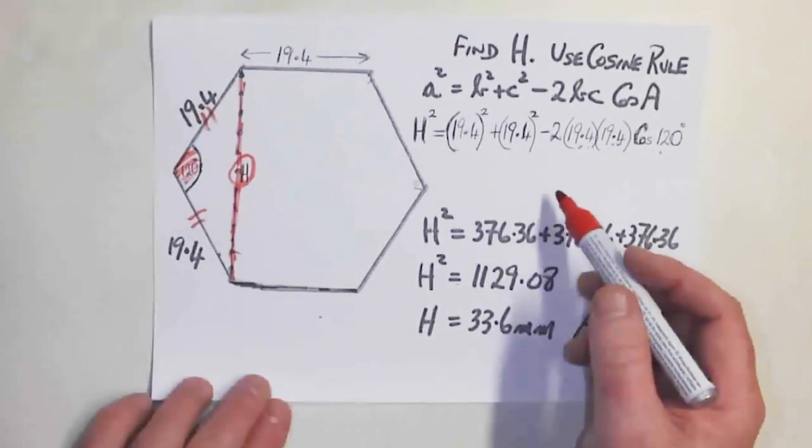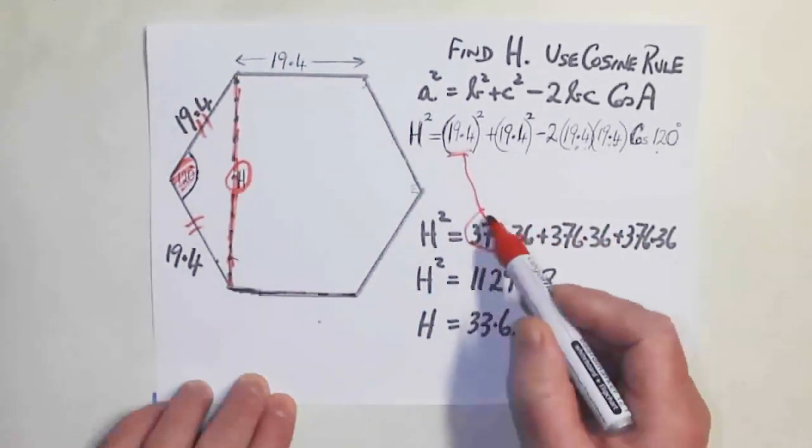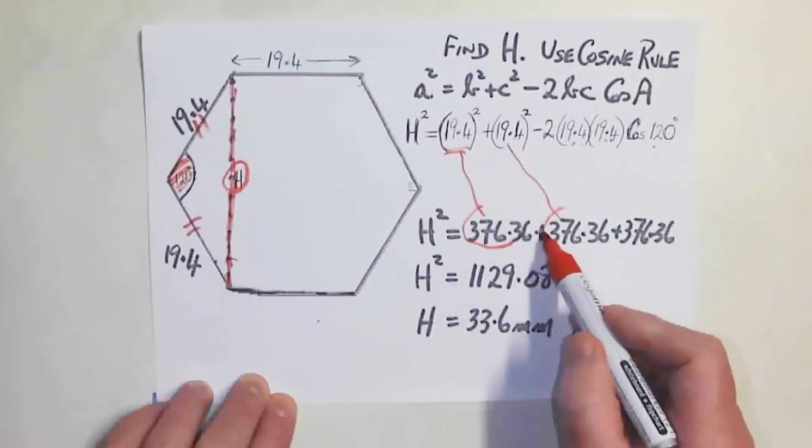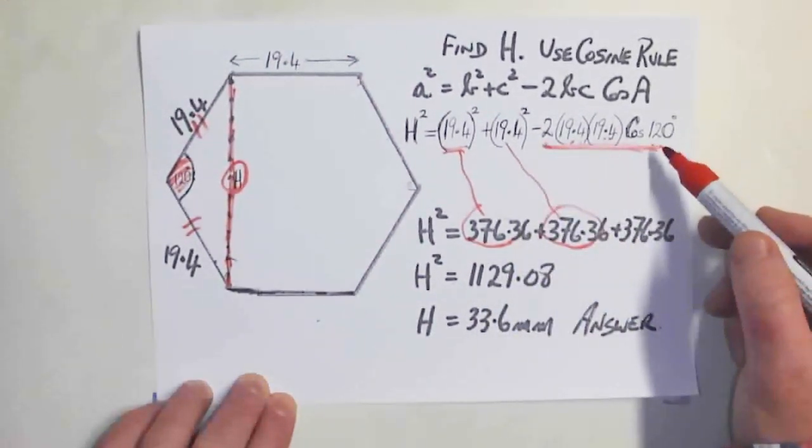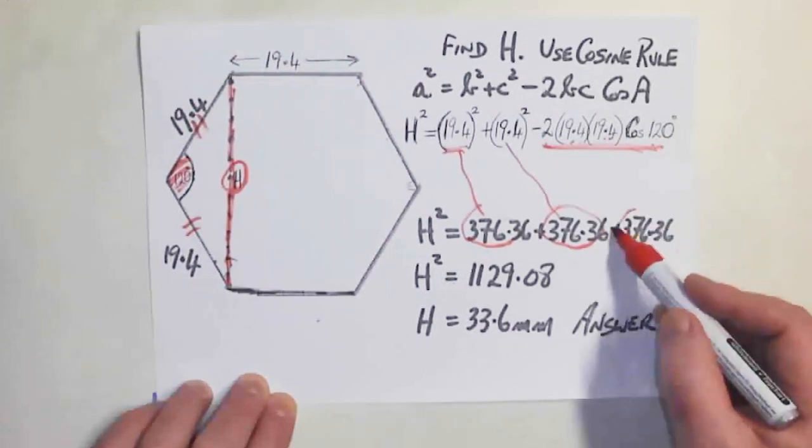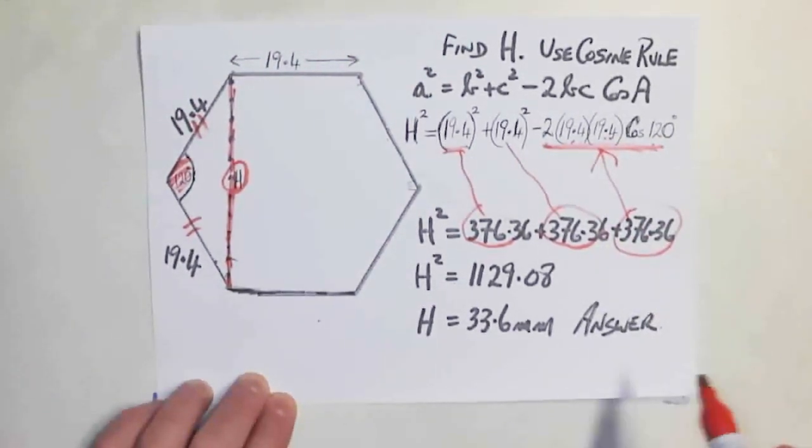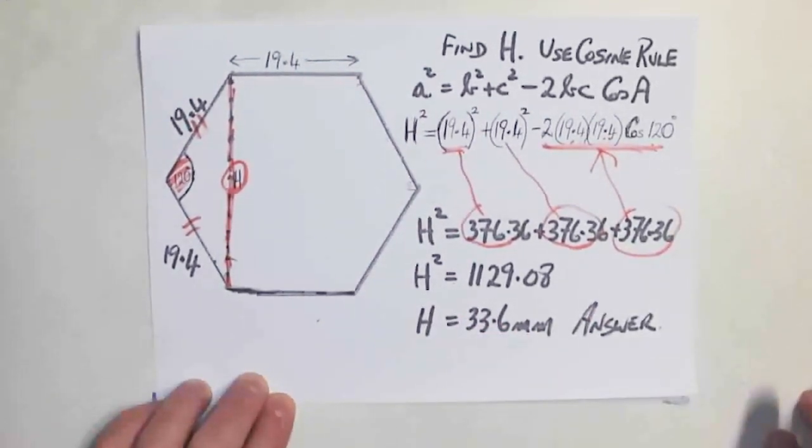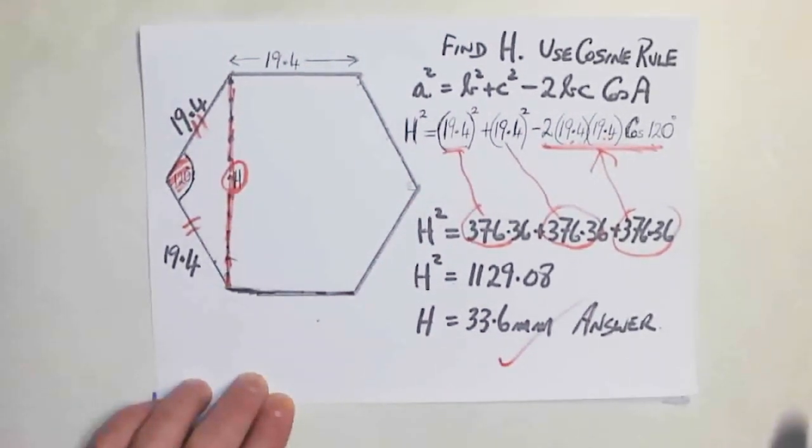It's kind of ugly looking as I say. 19.4 squared gives you this. 19.4 squared gives you this. And amazingly for me, when I work this out, because the cosine of 120 is minus 1.5, I get the same thing again here, which would make you think for a minute. So then add them up and you get H squared equal to 1129.08, the square root of both sides, and then to one decimal, H is 33.6 millimeters. It's long.